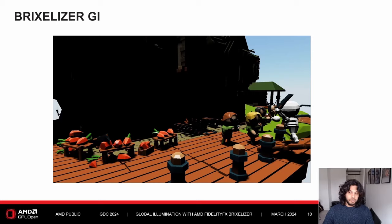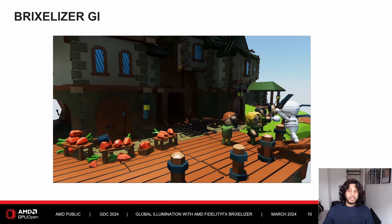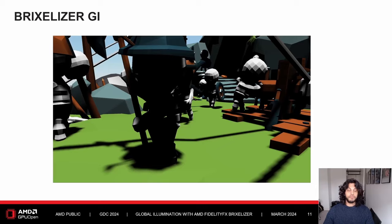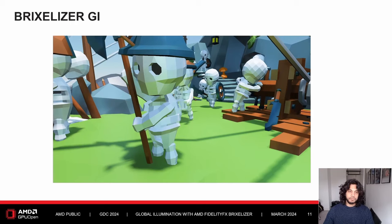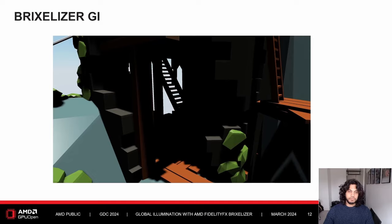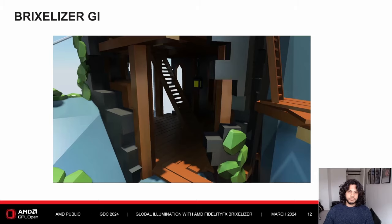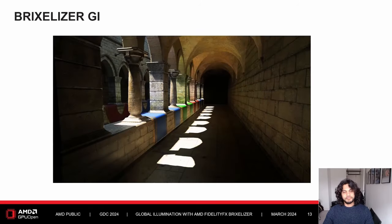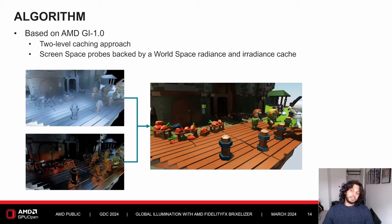Here are screenshots of direct lighting output, and then with the addition of indirect lighting through Brixelizer GI. There are also screenshots of the M1.0 algorithm, which is available alongside the Capsaicin framework.